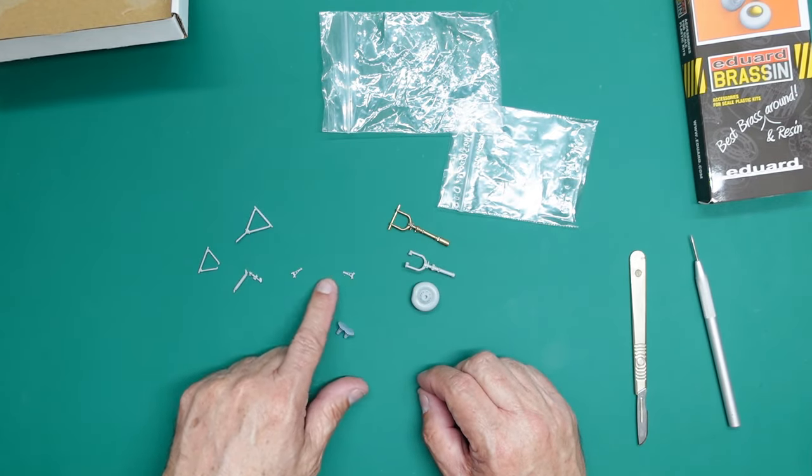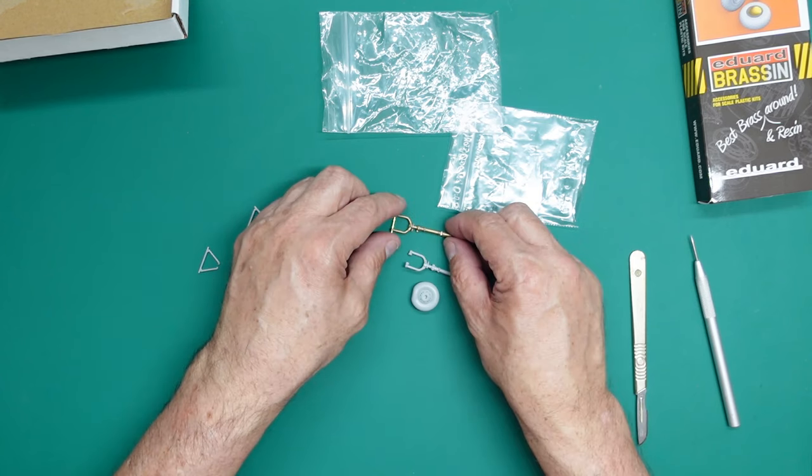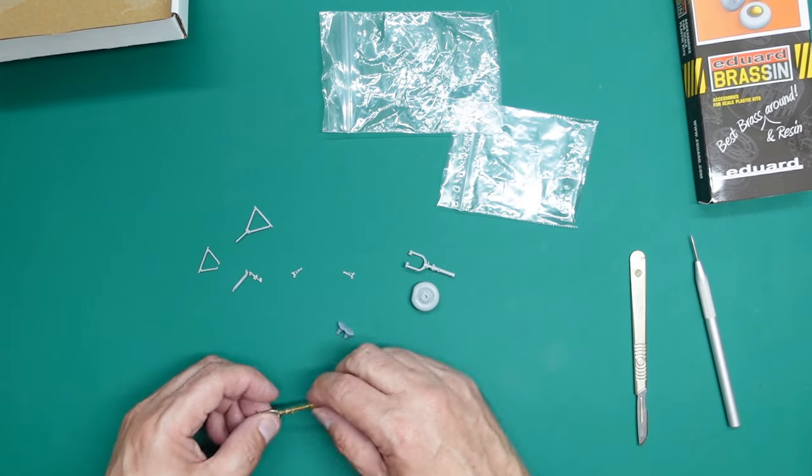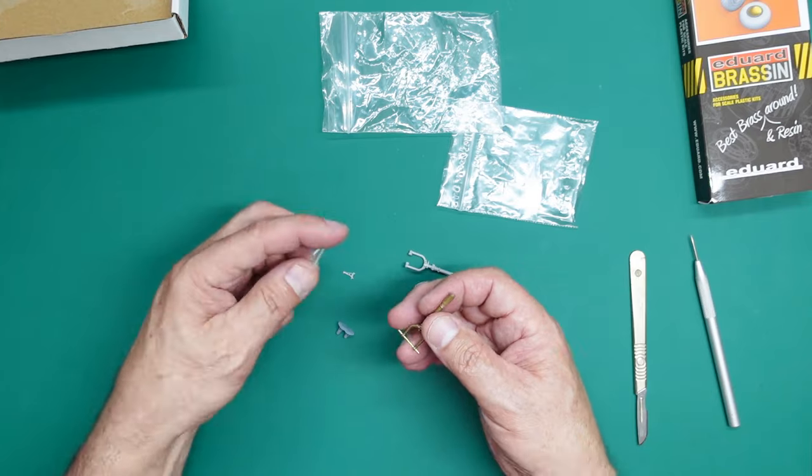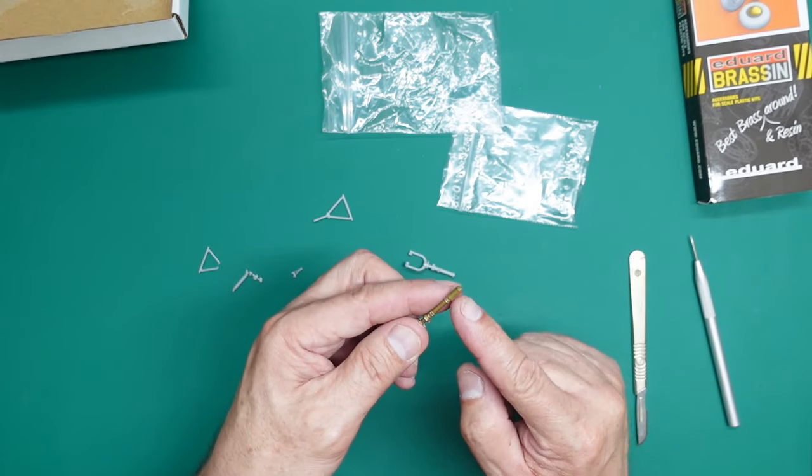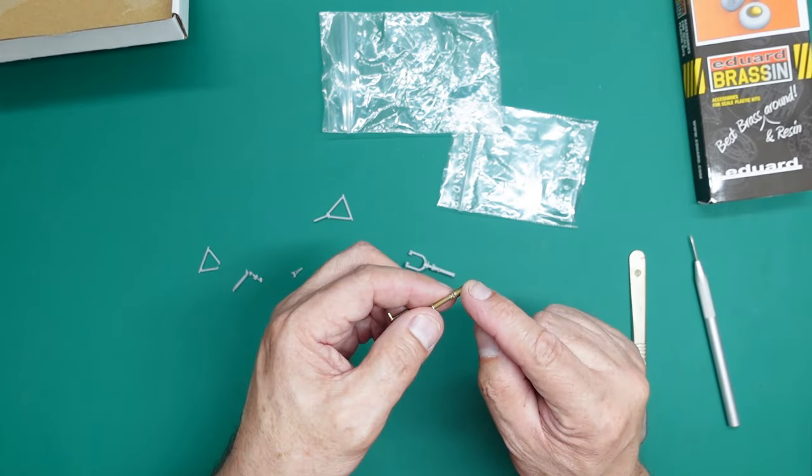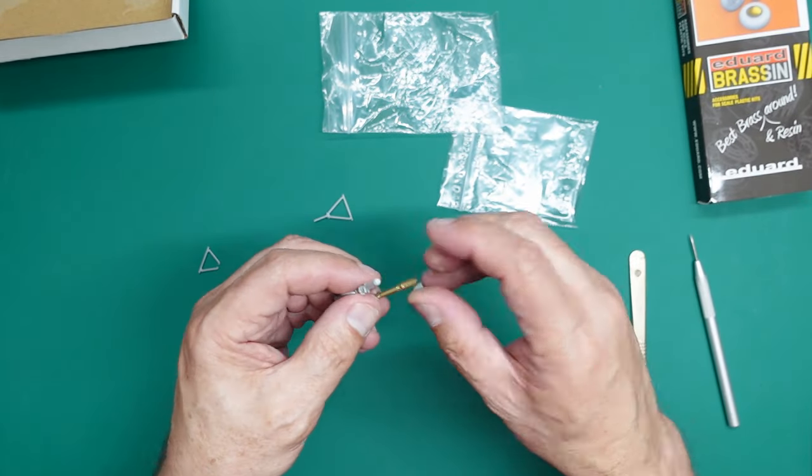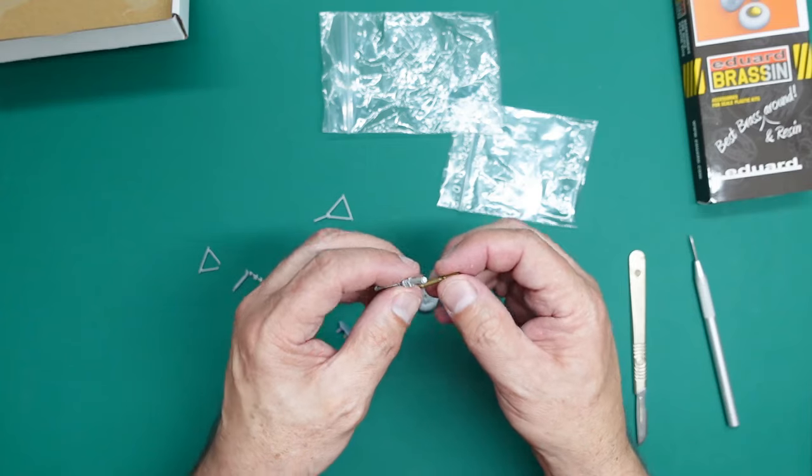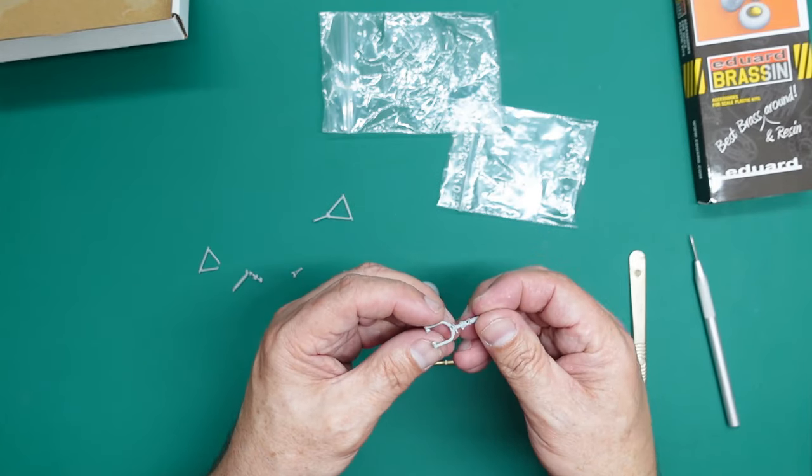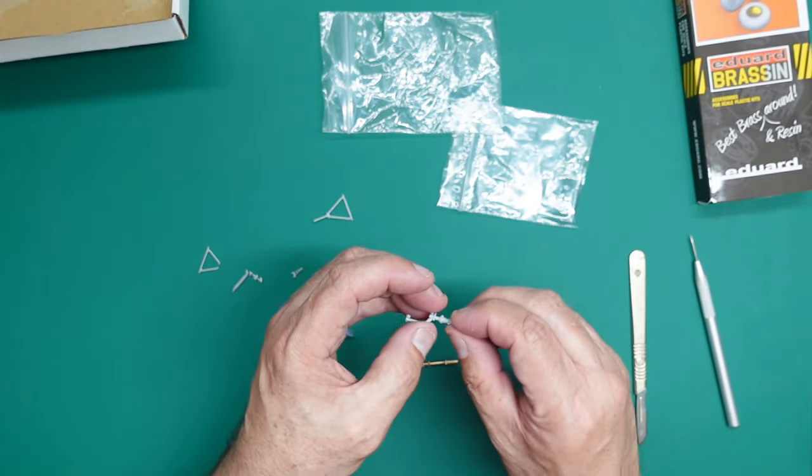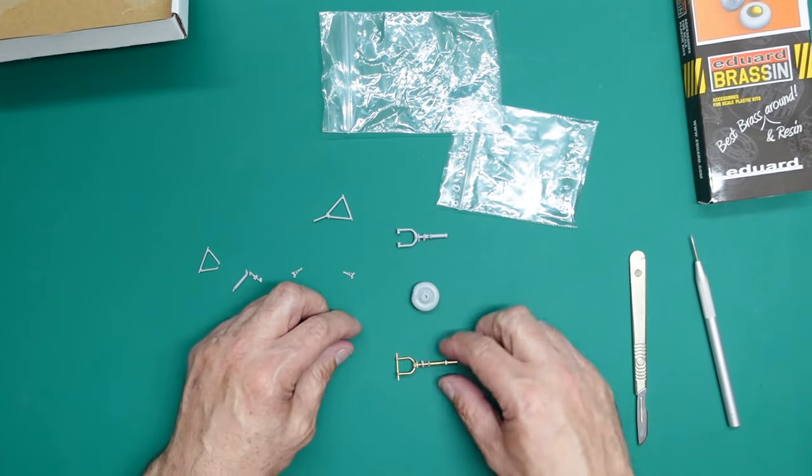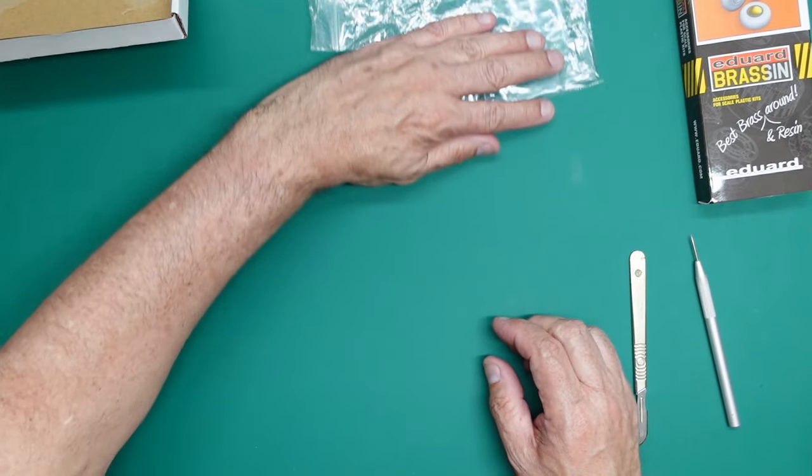So that's the brass nose gear. Obviously you've got your plastic parts here that you're going to use just as you would on the kit. You've got this lump on here that you're going to have to cut off.